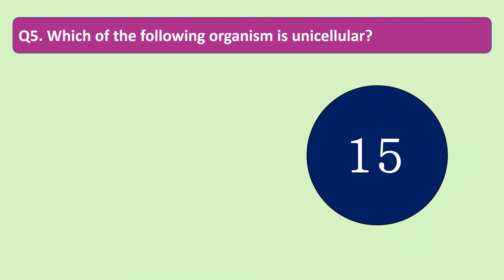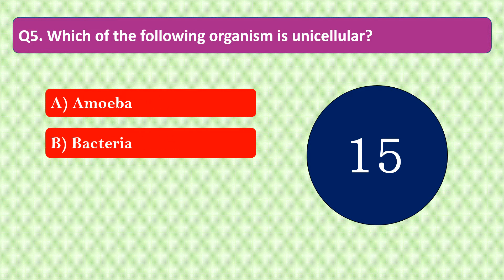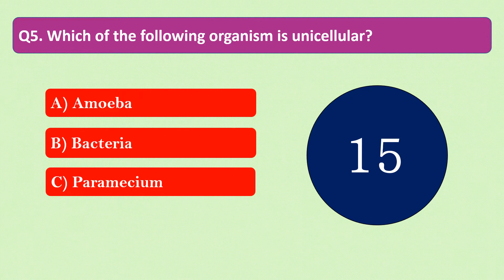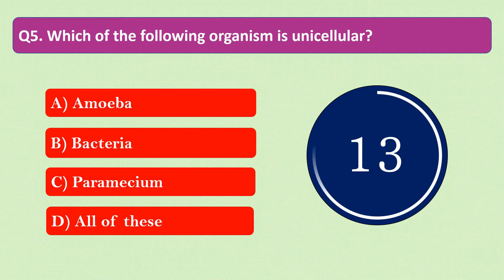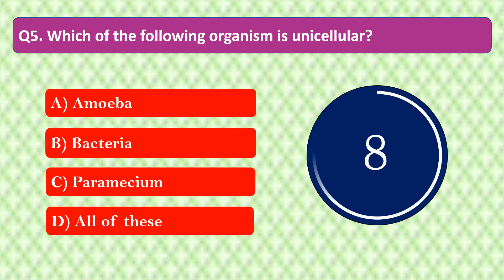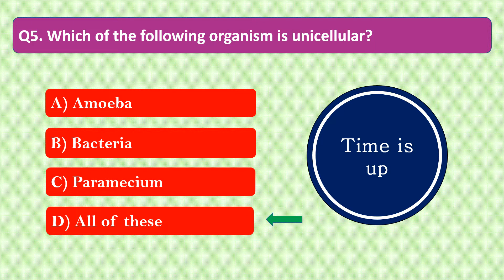Question number 5: Which of the following organisms is unicellular? The options are A. Amoeba, B. Bacteria, C. Paramecium, or D. All of these. Your time starts now. Your time is up and the right answer is option D: All of these. Amoeba, Bacteria, and Paramecium are unicellular organisms.